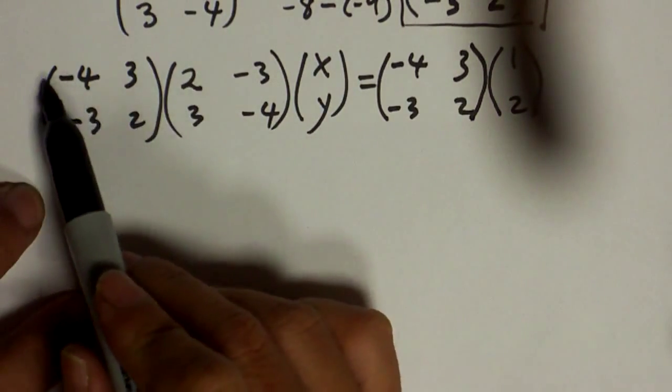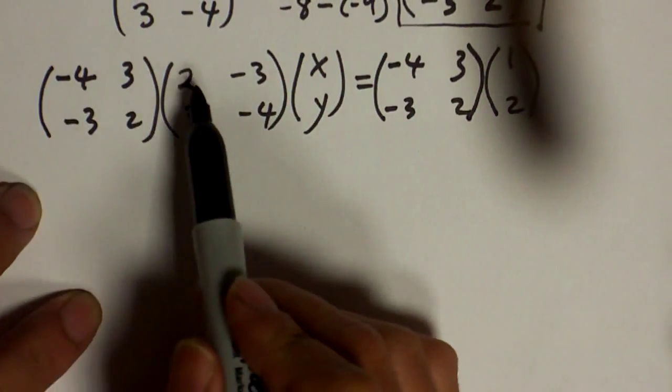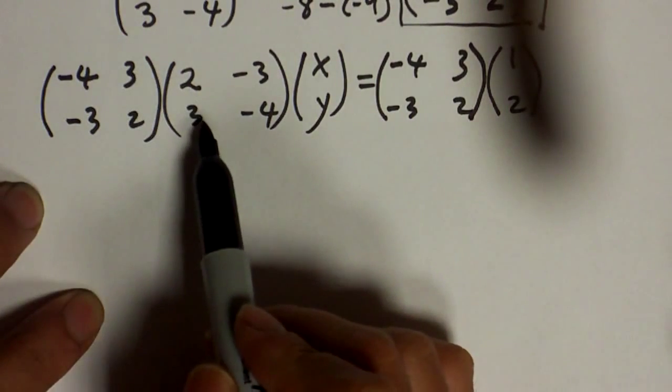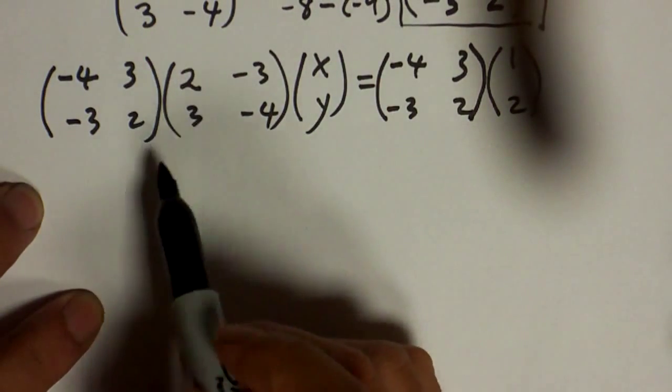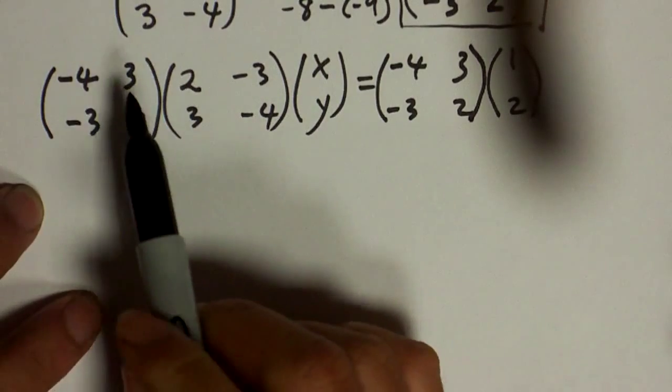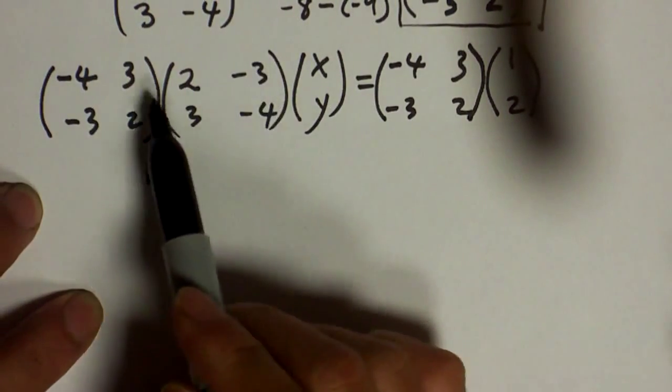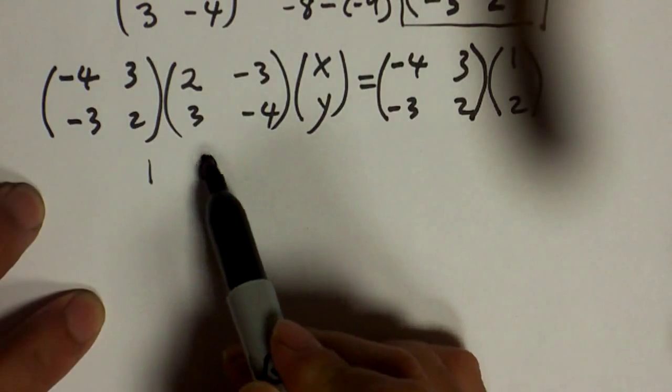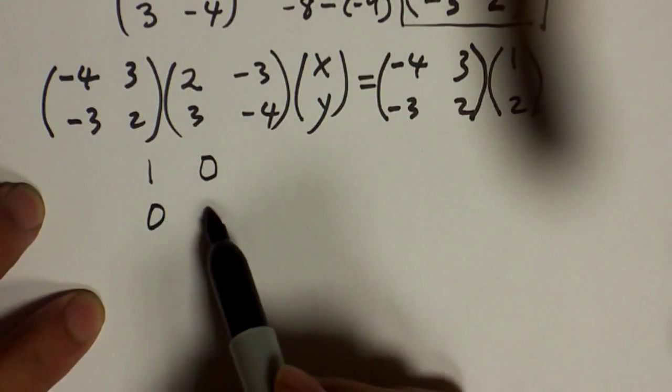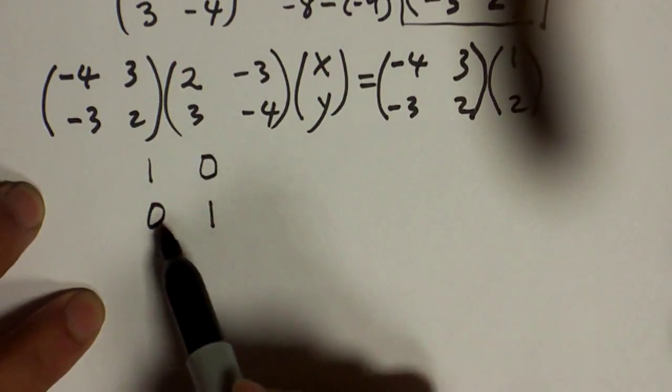Let's compute this side. If you do this, negative 4 times 2 is negative 8, 3 times 3 is 9, 9 plus negative 8 is just 1. The result should be the identity matrix [1, 0; 0, 1].